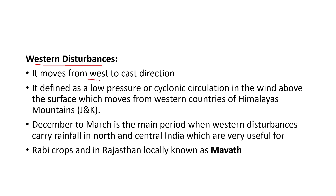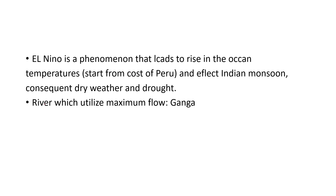The next topic is western disturbances. It moves from west to east direction and is defined as low pressure or cyclonic circulation in the wind above the surface which moves from western countries to the Himalayan mountains. December to March is the main period when western disturbances carry rainfall in north and central India, which are very useful for rabi crops and in Rajasthan locally known as Mewat. El Niño is a phenomenon that leads to rise in ocean temperature and affects Indian monsoon, resulting in dry weather and drought. The river that utilizes maximum flow is the Ganga.